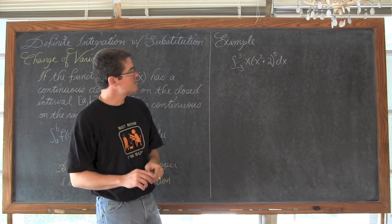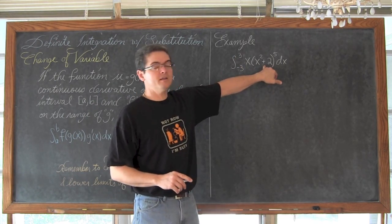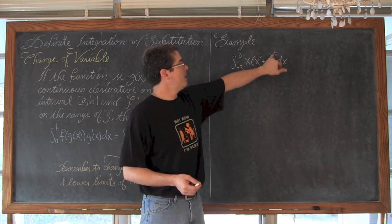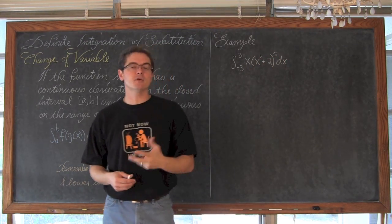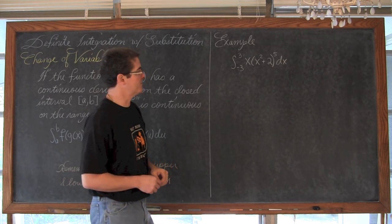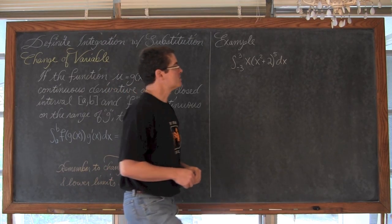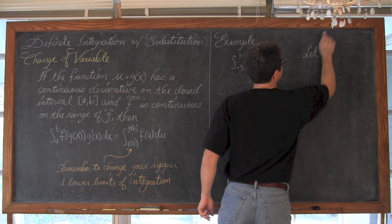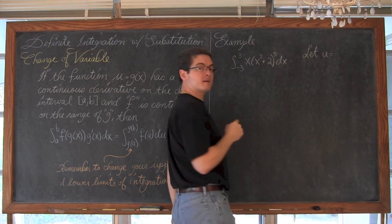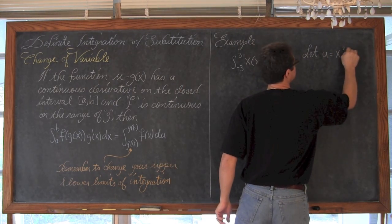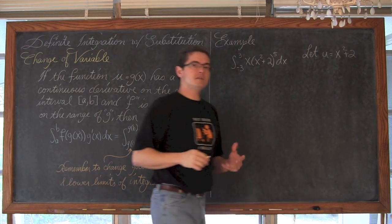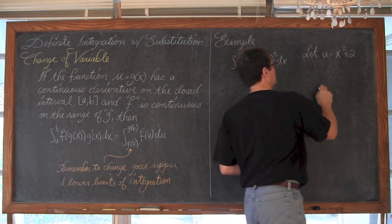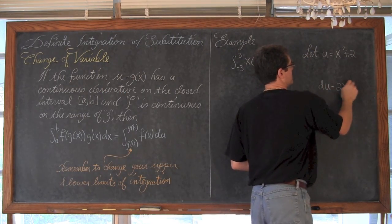So we are going to look at this expression. We are going to find the inner function, which looks like it is x squared plus 2, because it is inside that other math function of raising it to the fifth power. So we are going to let u equal x squared plus 2, and then du is going to be equal to 2x dx.